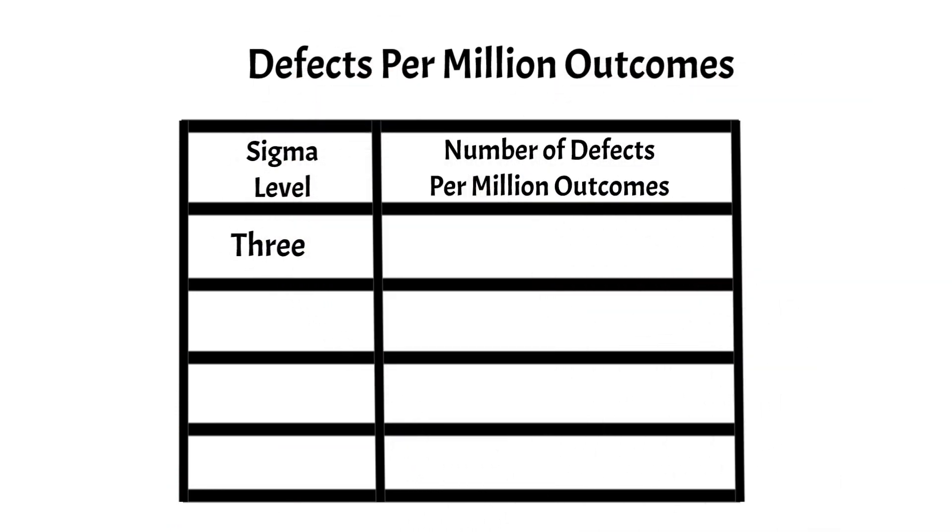In terms of number of defects per million outcomes, here is what it means to set standards at these levels. For a 3 Sigma process, we expect 66,800 or fewer defects per million outcomes.